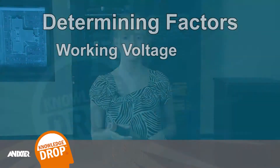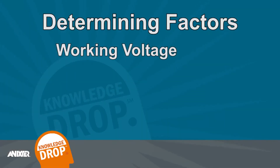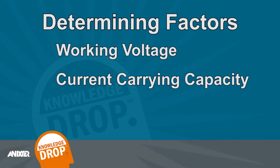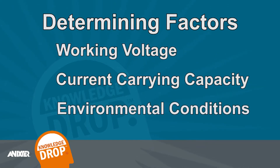Cables today come in a variety of different types, sizes, and materials. The makeup of cable is usually determined by three different things: one, the working voltage; two, the current carrying capacity; and three, environmental conditions.